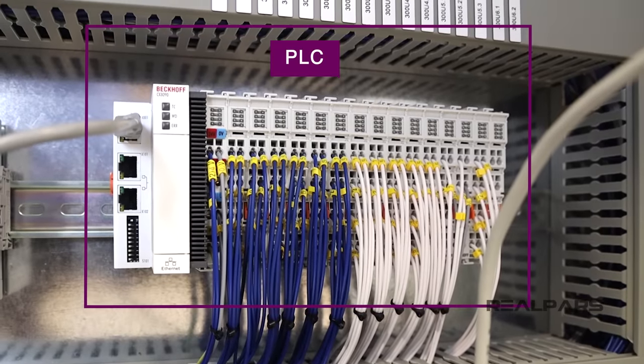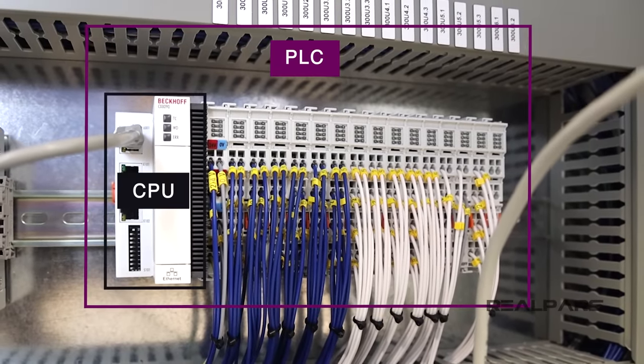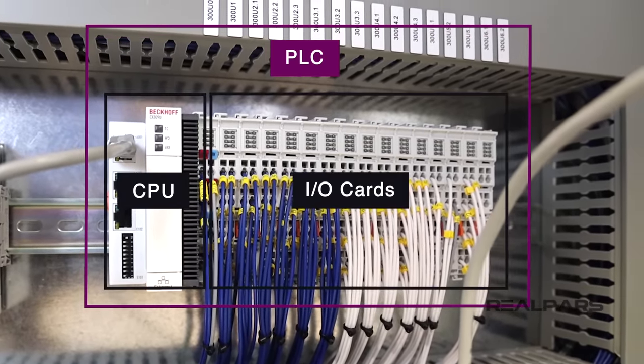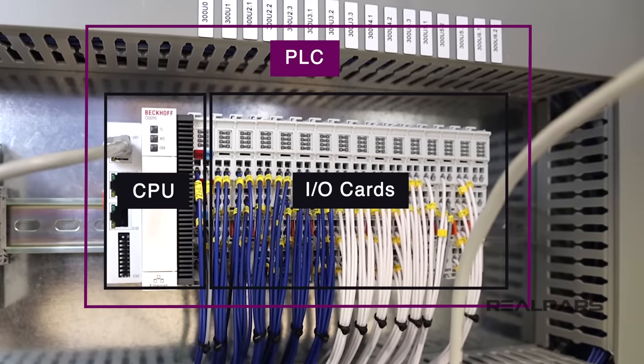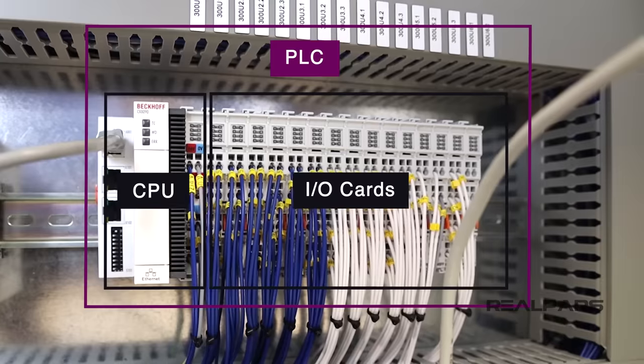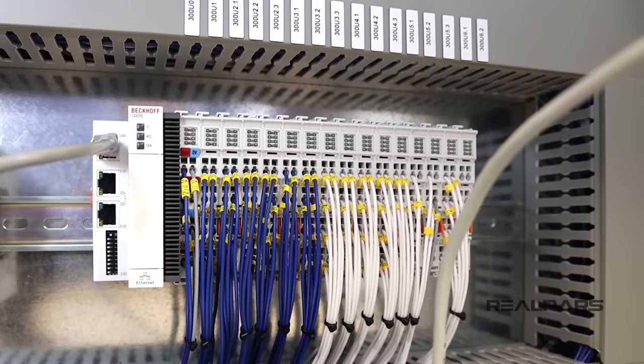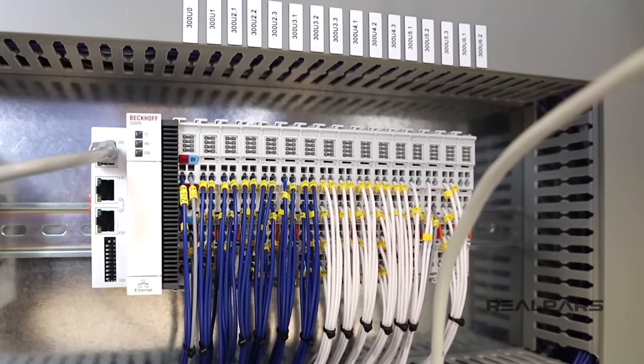This PLC that we have here is a unit that includes a CPU and a few input and output cards, which together make up the PLC hardware. Now, let's take a look at the wires that are connected to the PLC.